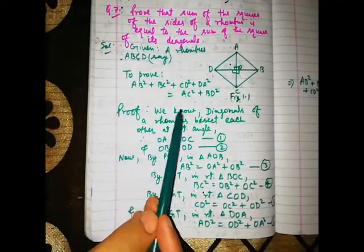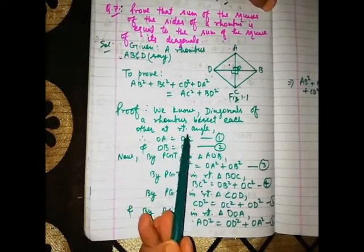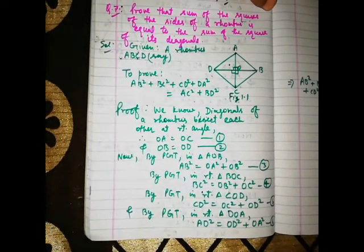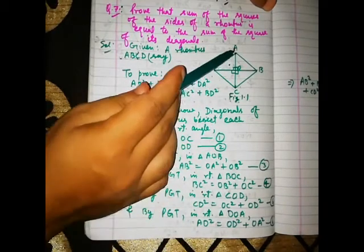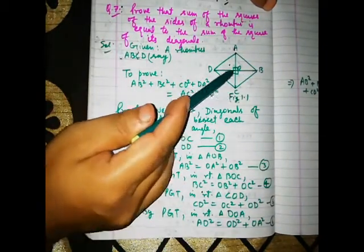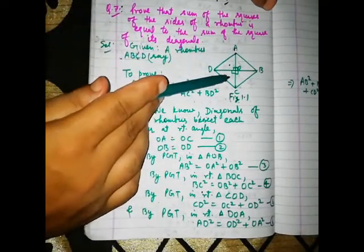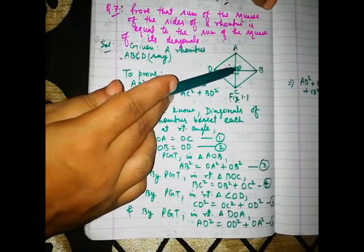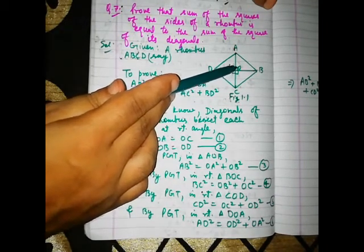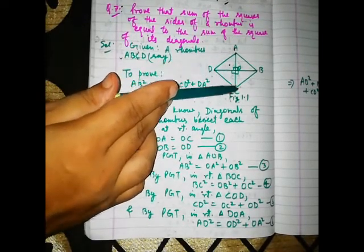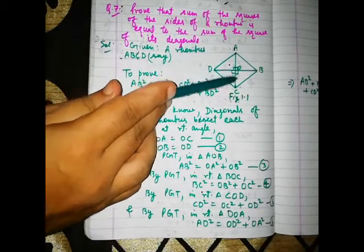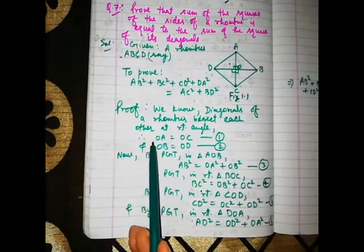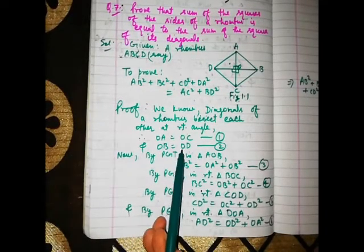We know that the diagonals of a rhombus bisect each other at right angles. Therefore triangles AOB, BOC, COD, and DOA are all right triangles. Since the diagonals bisect each other, OA equals OC and OB equals OD.